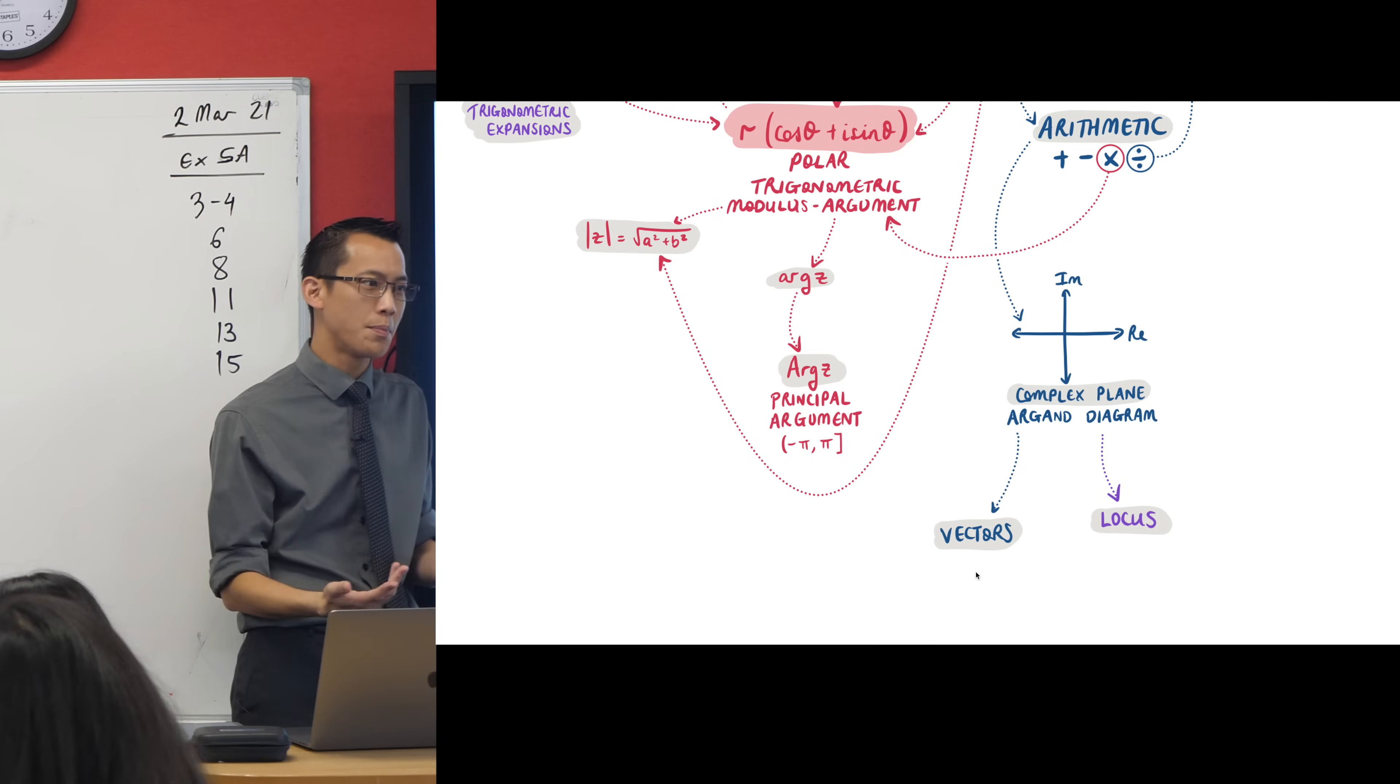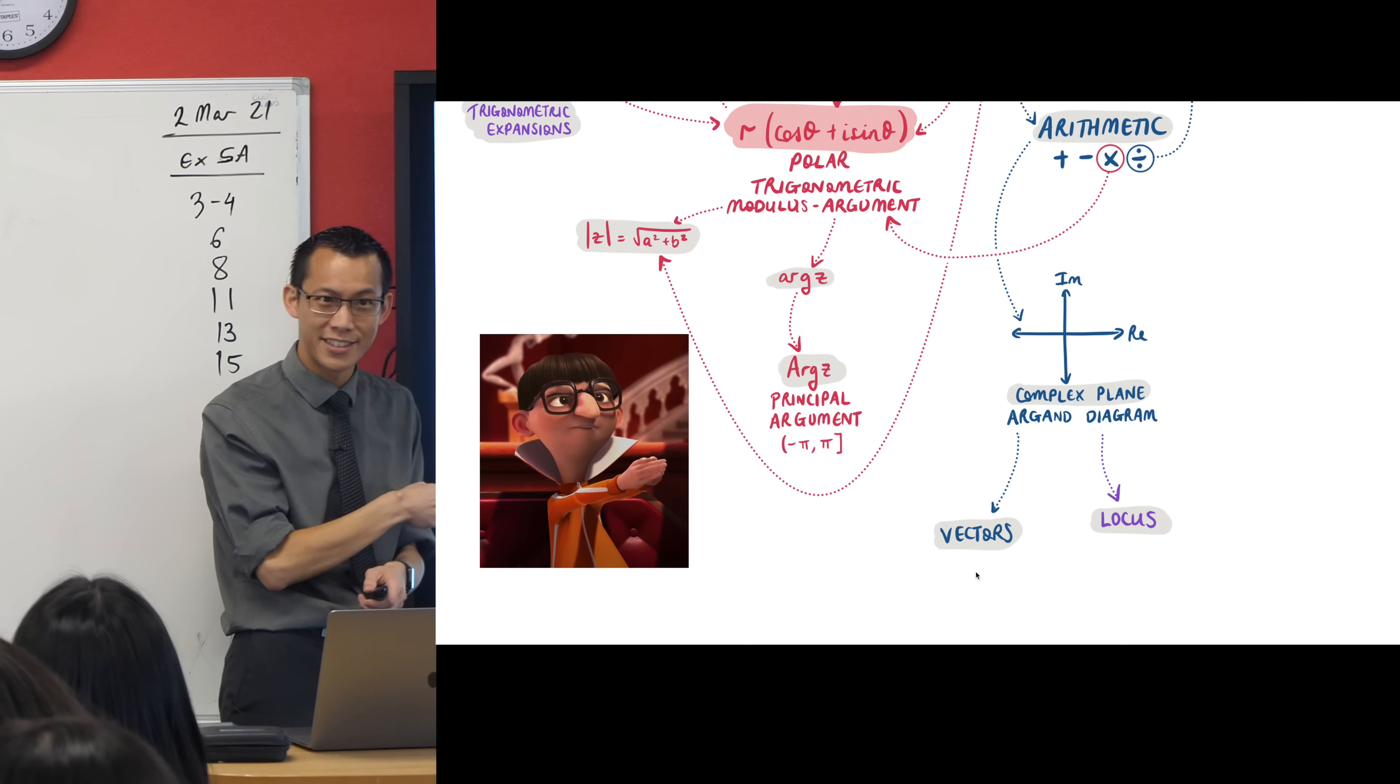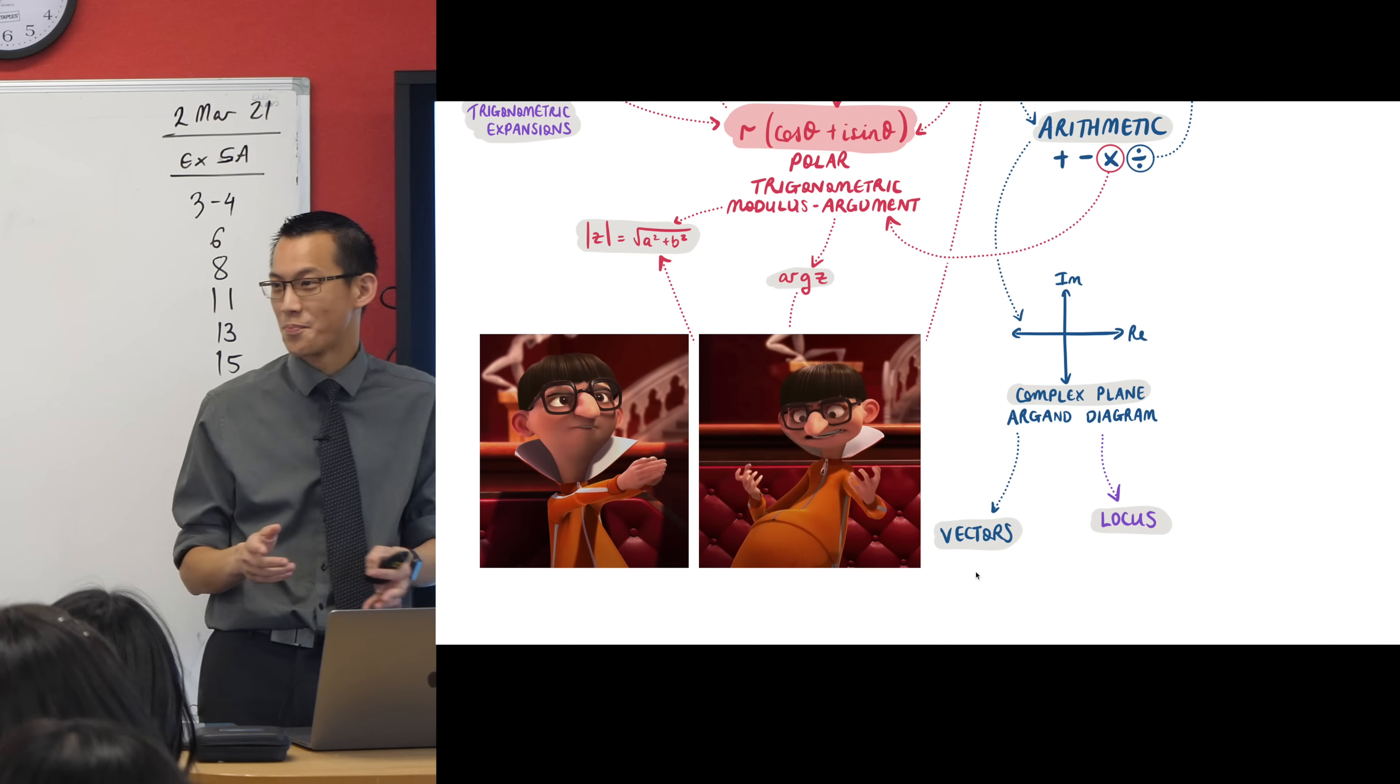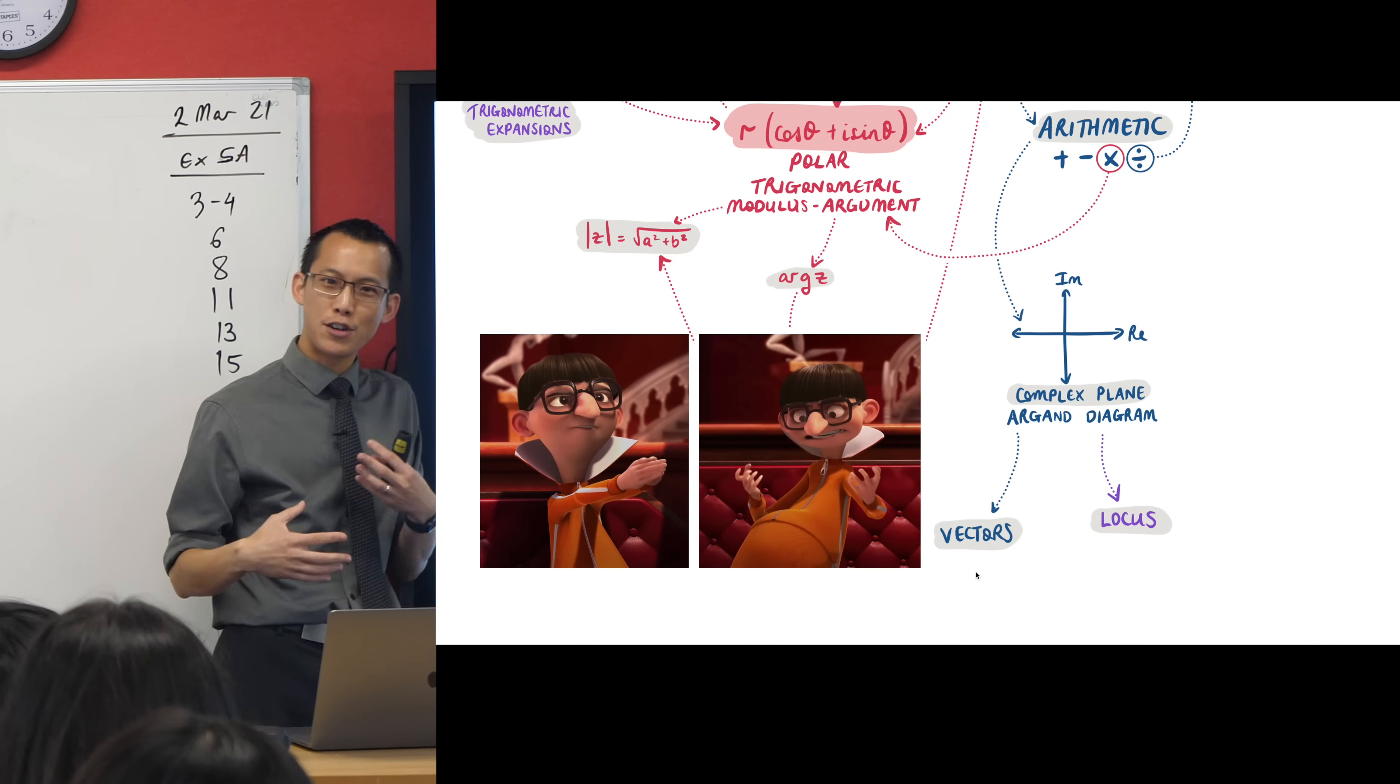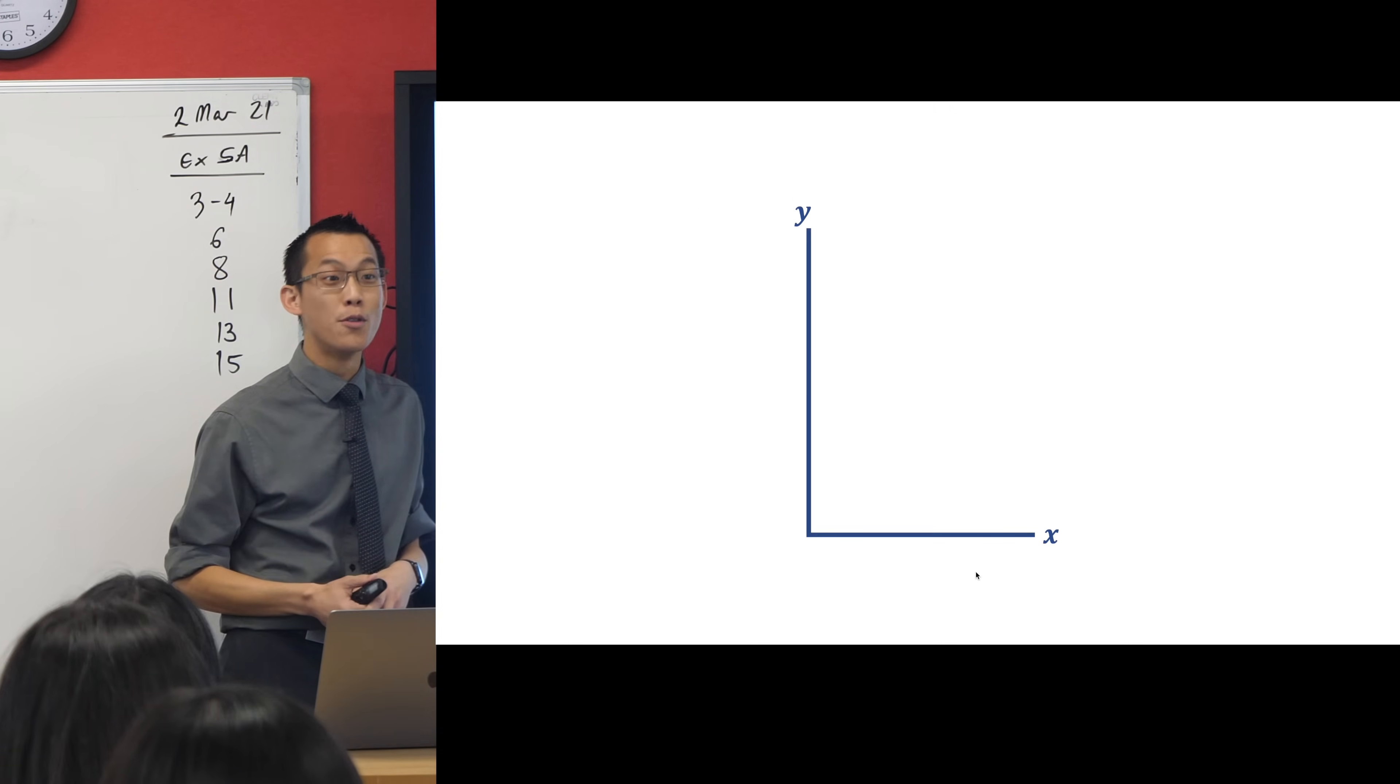And of course, what we were really laying the foundation for was numbers which have both direction and magnitude. We referenced briefly, hey, there are these things called vectors, they can be very useful for you to geometrically think about these objects, complex numbers, but then we said, okay, let's move on now, right?